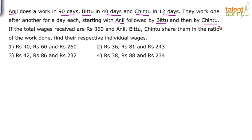Now if the total wages received are rupees 360, if the total wages for this work is 360 and Anil, Bittu, Chintu share them in the ratio of the work done, find the respective individual wages. There is some work which Anil can do in 90 days, Bittu can do it in 40 days and Chintu can do it in 12 days.